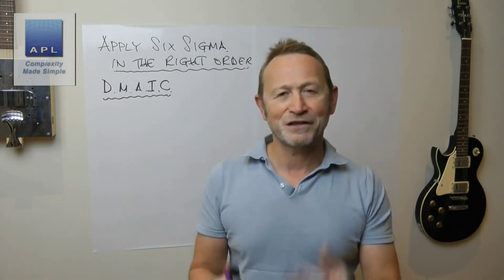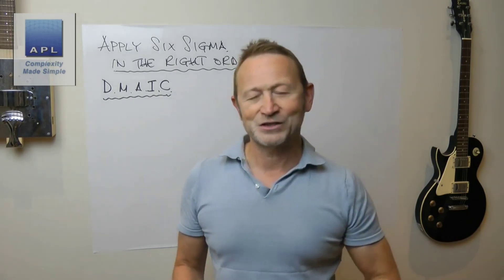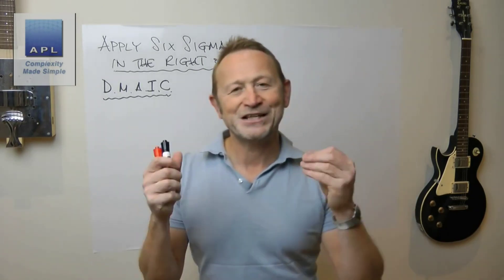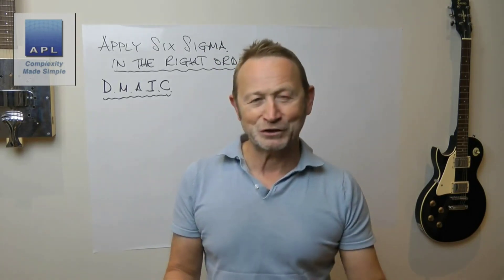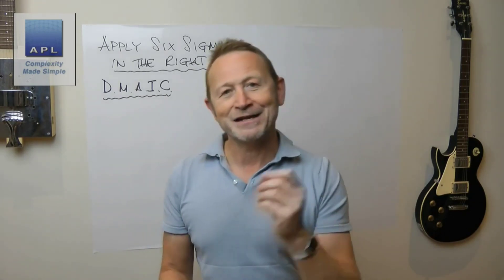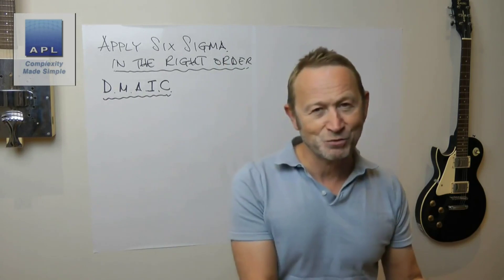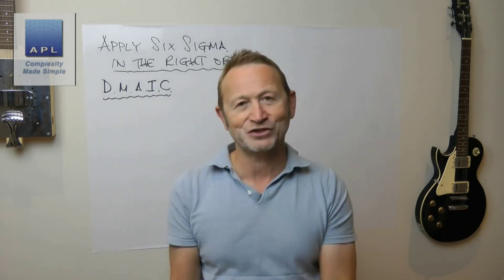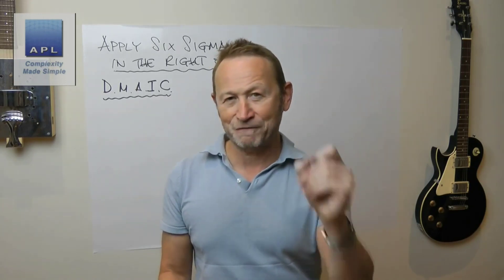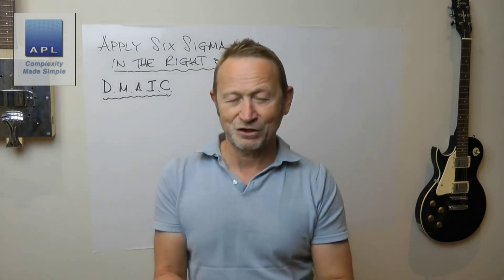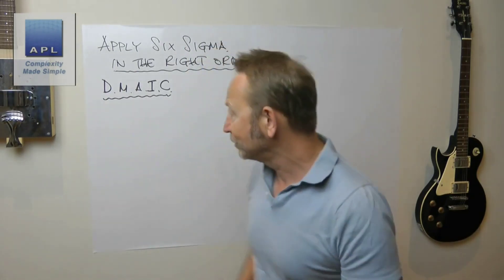One of the key things: everybody thinks Six Sigma is about collecting data and mathematics — and it isn't. What Six Sigma is about is physics. That's why it works. It's about applying the simple laws of physics, and then the mathematics helps you to do that. If you think of it in that order, the maths will have some value and you will achieve something. Six Sigma is about fixing technical problems — world-class technical problem solving. Physics first, math second.